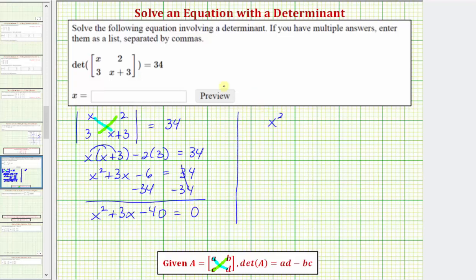This will factor into two binomial factors, where the factors of x squared are x and x, and the factors of negative 40 that add to positive 3 would be positive 8 and negative 5. So we write x plus 8 times x minus 5.